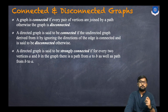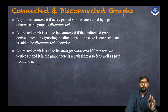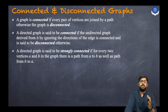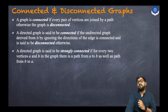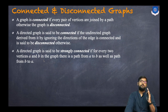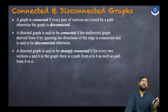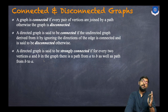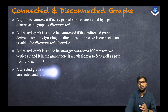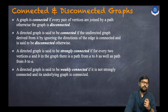A directed graph is said to be strongly connected when for every two vertices A and B in the graph, there is a path from A to B as well as a path from B to A. There must be paths in both directions — we can reach from A to B as well as from B to A. Then it is called a strongly connected graph.